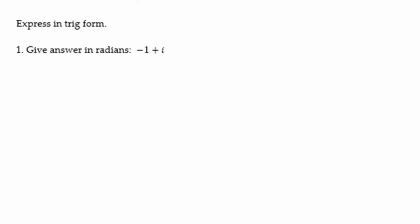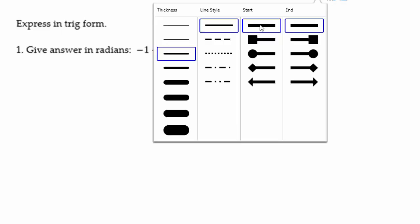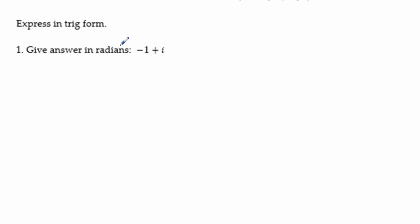The directions on 1 through 3 say express in trig form. On problems 1 and 2, we need our angle in radians, and on 3, it says to give the answer in degrees. For each of these, we need to know two things: r and theta, because then we're going to plug into what trig form normally looks like.